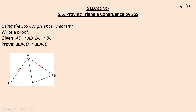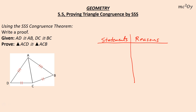We're going to try some proofs using the side-side-side congruence theorem. I want to think through my proof before I start writing. I have statements and reasons. Looking at my givens: I have AD congruent to AB — that's a side. I have DC congruent to BC — that's another side. And I can see that AC is congruent to itself by the reflexive property — that's my third side. So I have side-side-side.